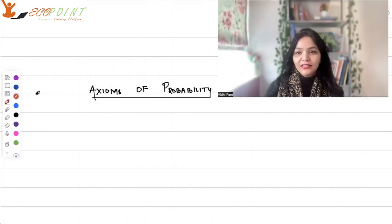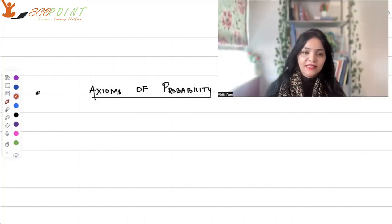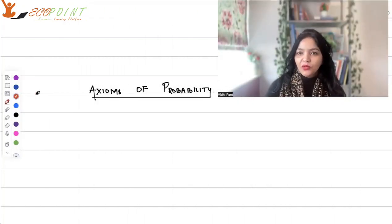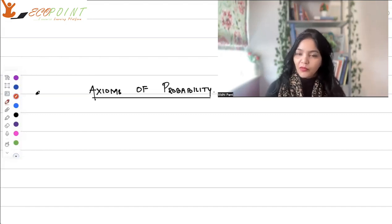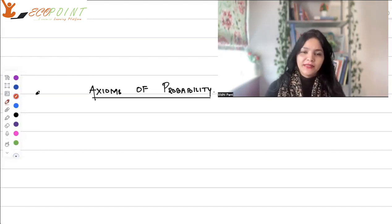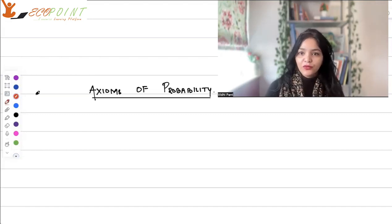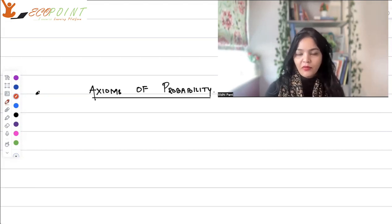Hi guys, welcome to another lecture from basic statistics. Today we have to work on axioms of probability. There are three main axioms of probability, but before getting on to that we are working on the concept of probability.